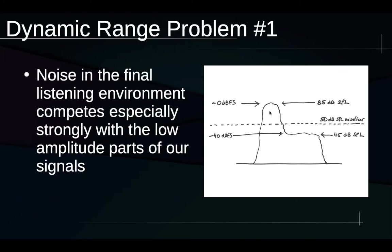Let's take a look at the higher levels first. This section where I'm pointing the mouse is the part of the project with the highest levels, and in our file or signal that area peaks around 0 decibels full scale — the digital maximum. Because that part is pretty loud, the listener has adjusted their playback volume so that loud part plays at 85 decibels SPL — a very comfortably loud sound pressure level in the room.